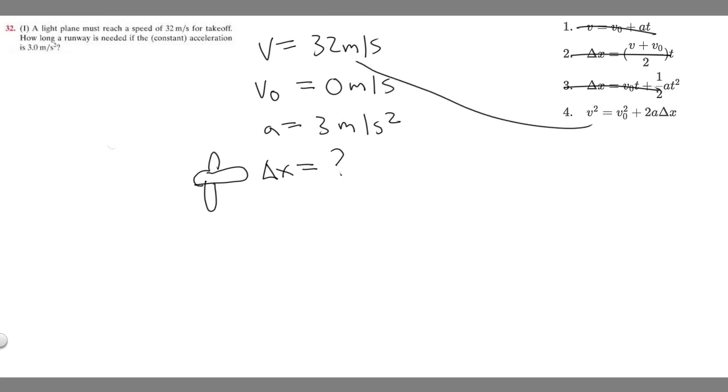So v squared—we know v is 32—so it's going to be 32 squared equals v sub 0, which is 0 squared, and 0 squared is just 0, plus 2 times a, which is 3, times delta x. I'm just going to multiply this, it's going to become 6 times delta x. I'm just going to get rid of the 0, so 6 times delta x. Then we can just divide both sides to solve for delta x. Delta x equals 32 squared over 6.